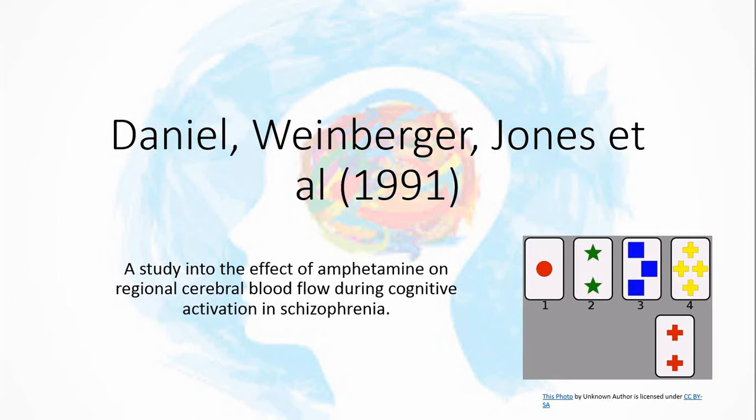Hello and welcome to our flip learning task for OCR GCSE psychology. This is the first study we need to look at for our psychological problems section. So far in the lesson we've looked at two theories of schizophrenia: the social drift theory and biological causes of schizophrenia.